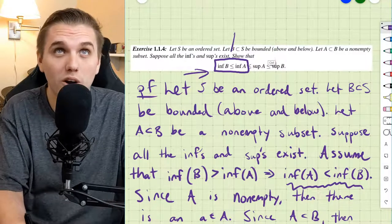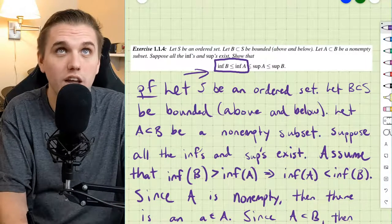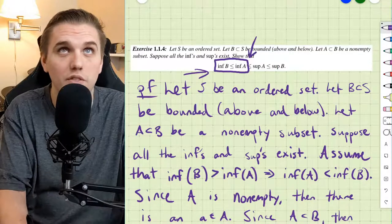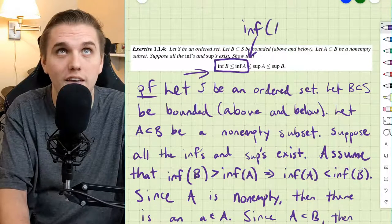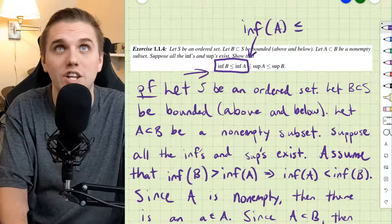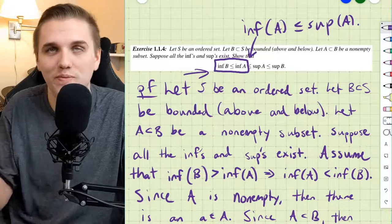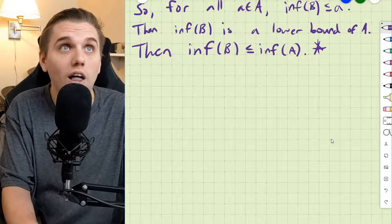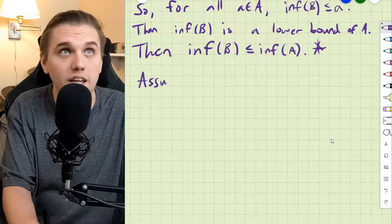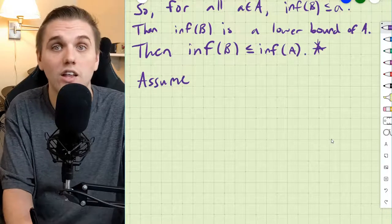Now, we still have one more inequality to show here, and that's specifically this one, that the infimum of A is less than or equal to the supremum of A. Why is that true? Well, let's assume the opposite and see if we can get to a logical contradiction.